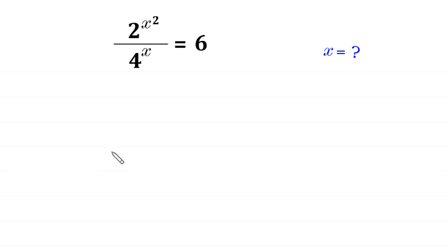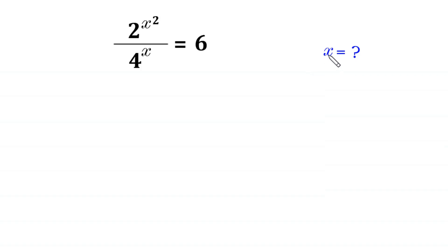Hello, welcome to how to solve this very nice exponential equation. 2 to the power x squared divided by 4 to the power x is equal to 6. We need to find all possible values of x.